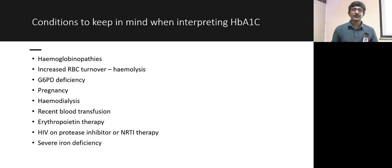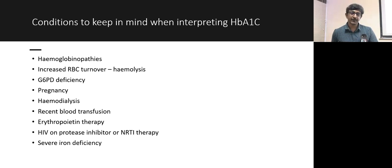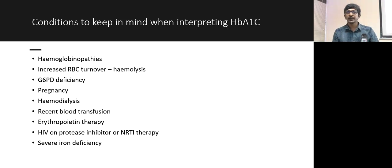When interpreting HbA1c, there are conditions you need to keep in mind — you cannot blindly use it for everyone. Conditions affecting its reliability include hemoglobinopathies, high RBC turnover such as hemolytic anemia, G6PD deficiency, pregnancy with fetal hemoglobin, hemodialysis, recent blood transfusion, erythropoietin therapy, HIV patients on protease inhibitors or NRTI therapy, and severe iron deficiency anemia. In these conditions, interpret HbA1c with caution.